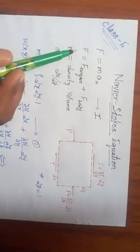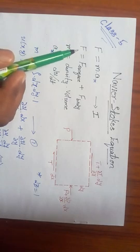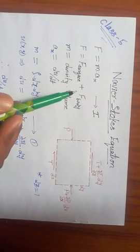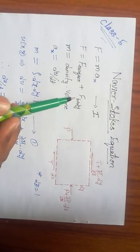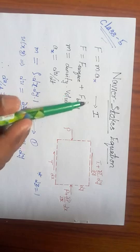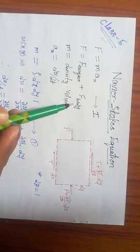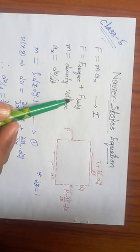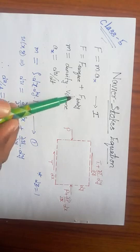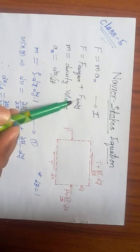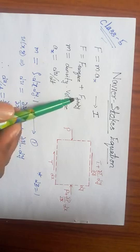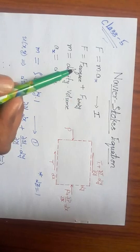Now for the forces: forces are broadly classified into surface forces and body forces. Examples of body forces include the self-weight of an object — which depends on mass and gravity — so gravitational force is one example. Any electrical energy possessed by the body also comes under body force.